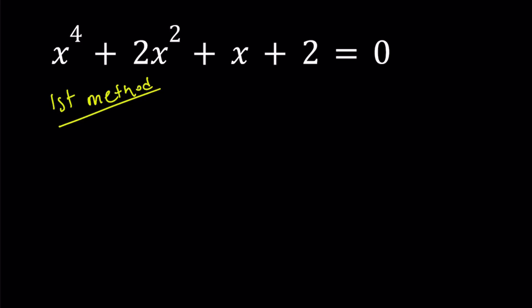You can look for rational solutions. If we check the divisors of 2 or factors of 2, first of all, notice that there are no positive solutions because all the coefficients are positive. So you're only going to be looking at negative 1 and negative 2, and unfortunately those values do not satisfy the equation. Therefore, we don't really have any rational solutions.